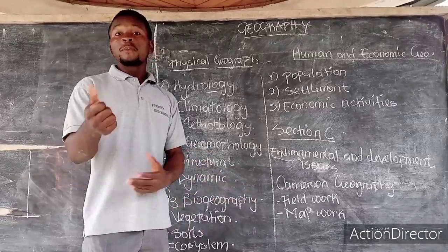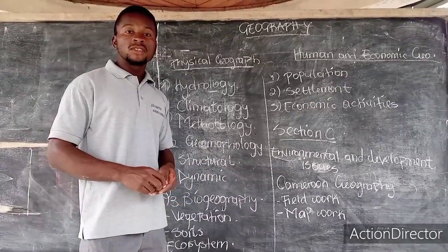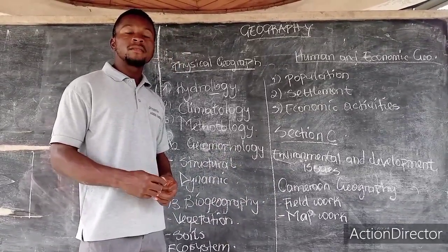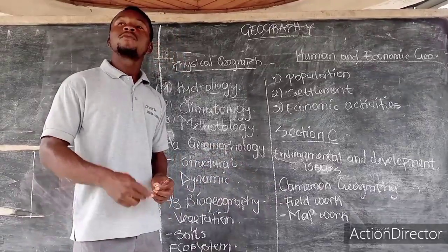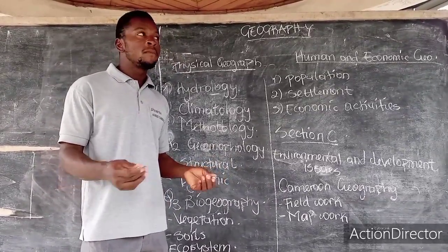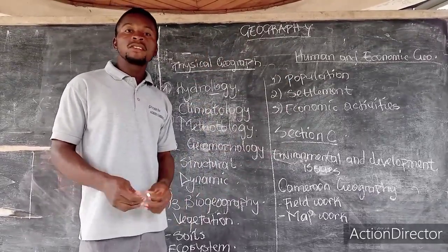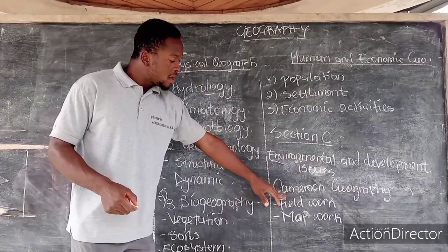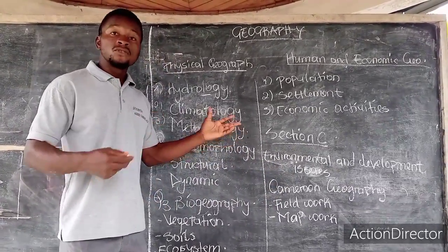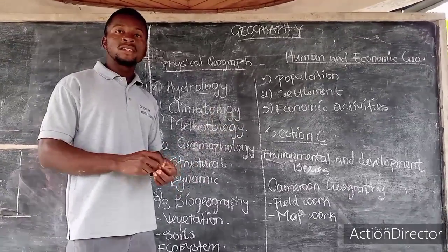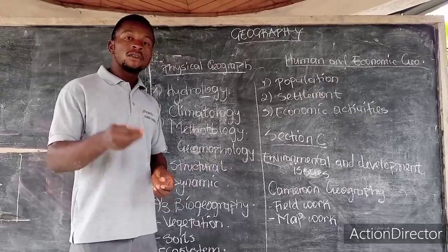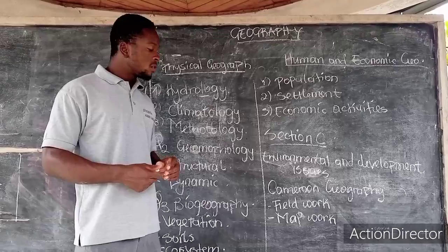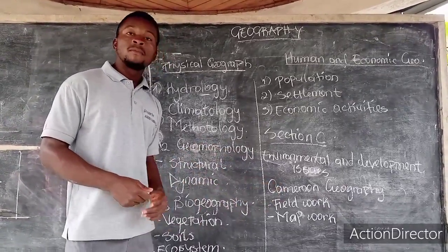Now going to Paper 3, there are four questions you must answer. One question must come from map work — that is a composite question worth about 30 marks. There is also a fieldtrip question based on work you did in the field, such as stream velocity, soils, road use, land use, or relief. If you revise what you learned during your fieldtrip, you are qualified to answer that question.